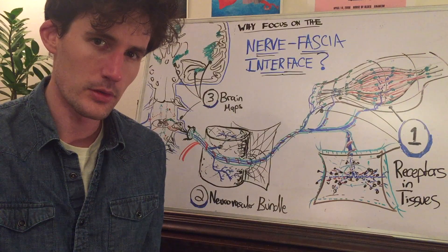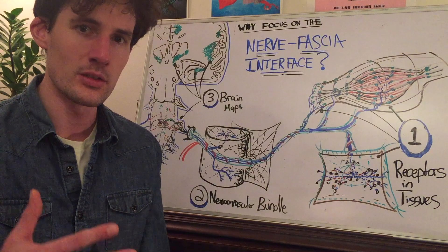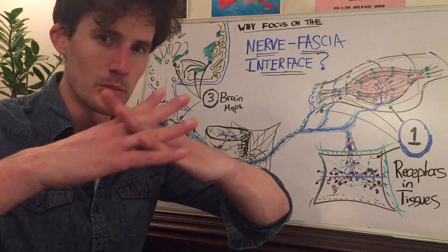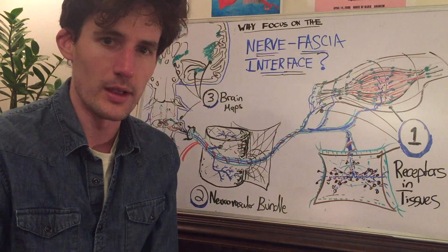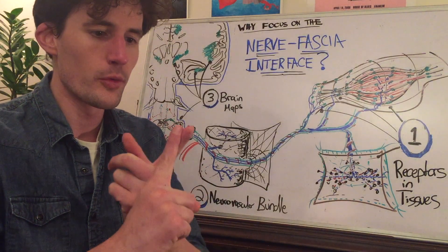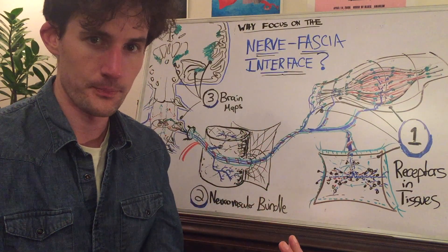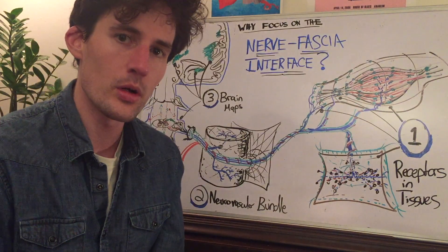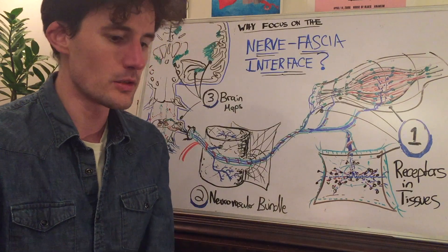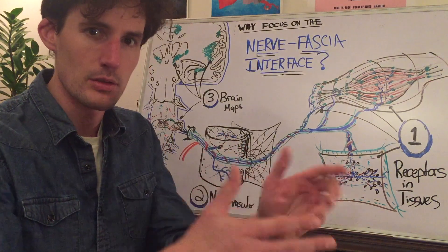Why would a manual therapist or a movement practitioner care about the connection between nerve and fascia? What's the use of placing these two systems and their meeting points at the center of your attention? Well, let's assume that you're trying to improve a pattern of pain, or overcome a limitation in someone's movement, or help someone inhabit themselves more fully. Let's also assume that you'd like to create not just a momentary change in the system, but a sustained change over time.